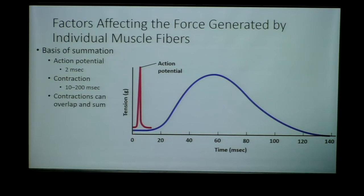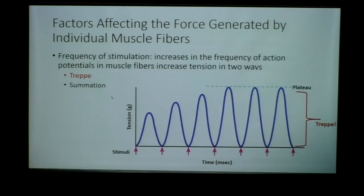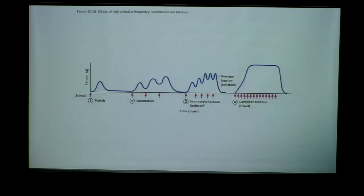We fire one action potential, but the muscle has not completed its contraction — the latent phase, the contraction, and the relaxation phase have not completed. We can then fire another action potential and another, and those contractions can begin to overlap. That is what we call summation. It is important to distinguish TREP, where there is full muscle relaxation in between, from summation, where contractions overlap.